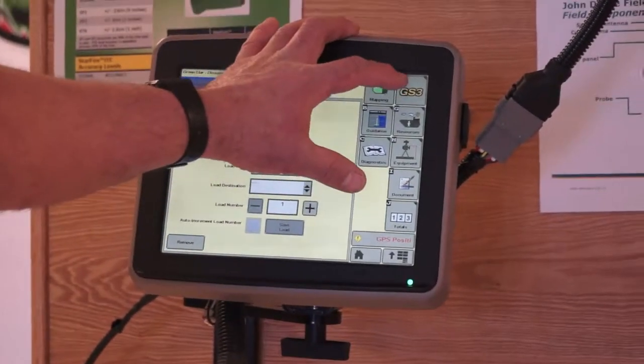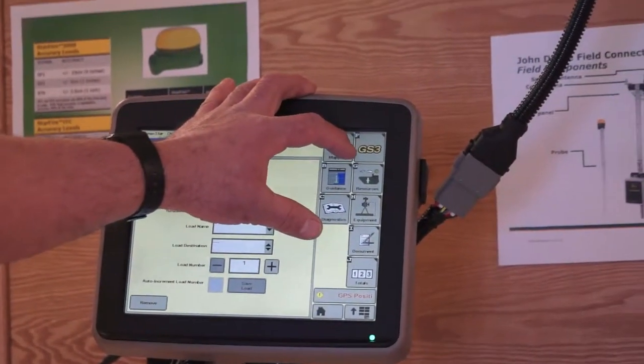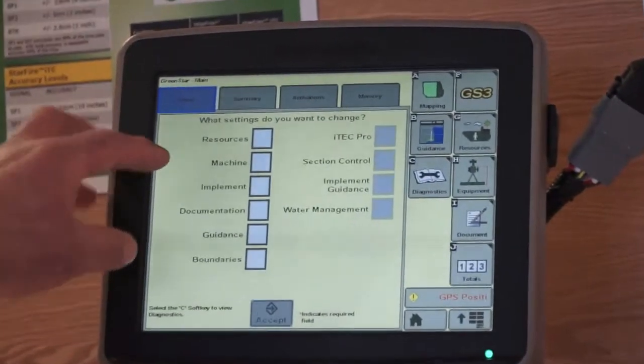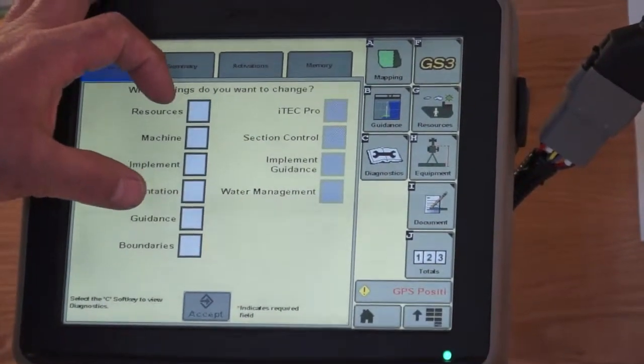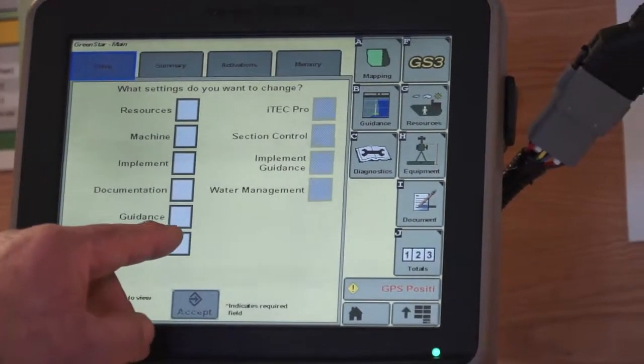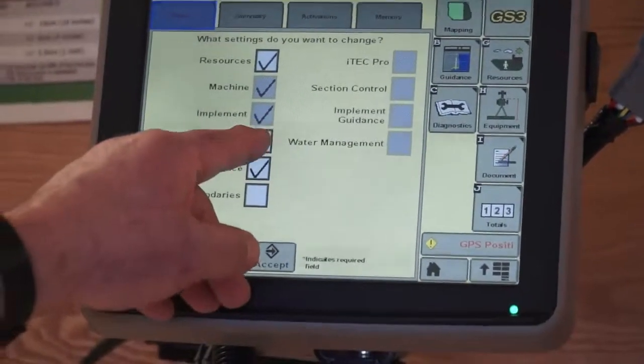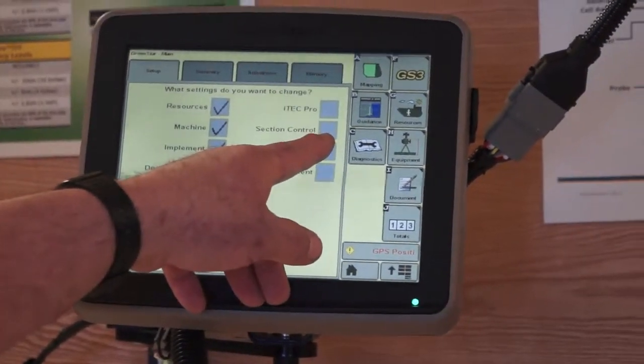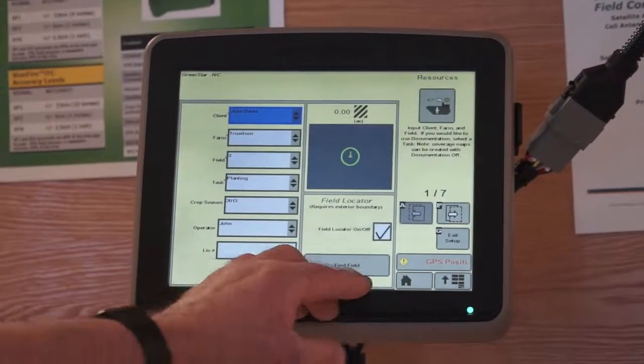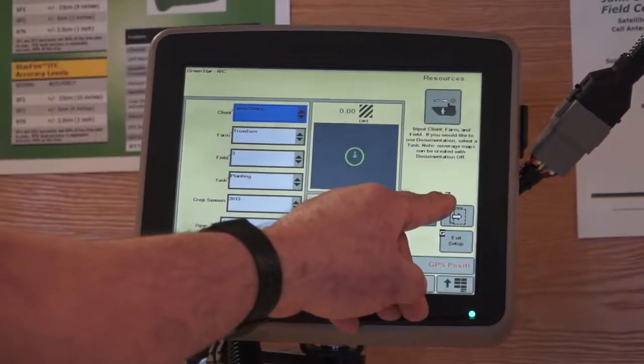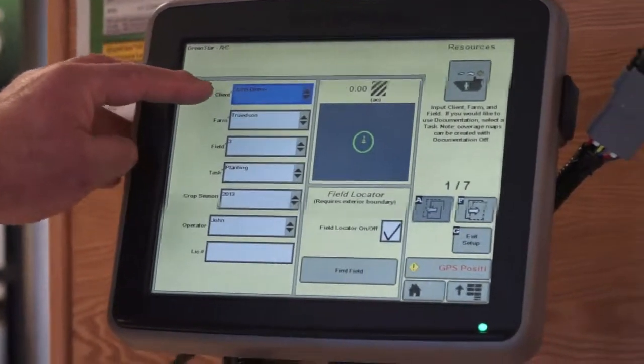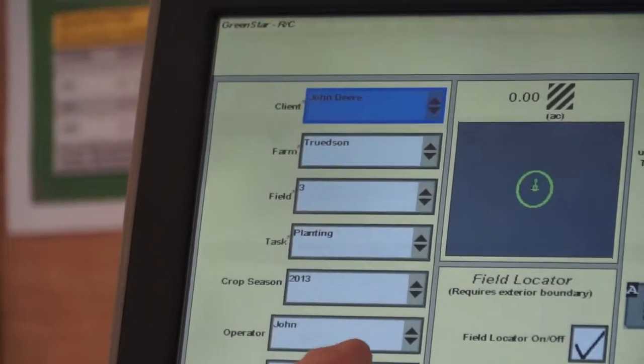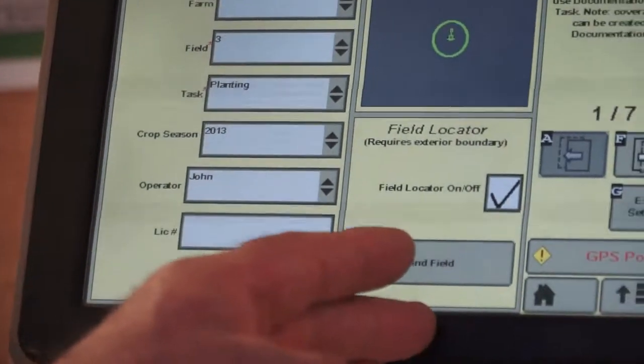Another option, if you're having trouble getting your documentation or recording to function, go to GS3. Here we hit setup. All of these boxes are basically checkboxes of operation that I want to check. So if I'm having trouble with guidance and documentation, and if I was on a planter with section control, I could check that box as well. I'm going to go through one of seven pages now.